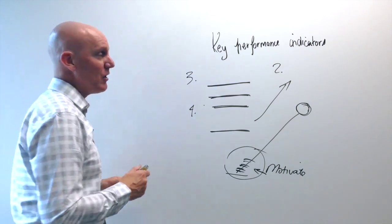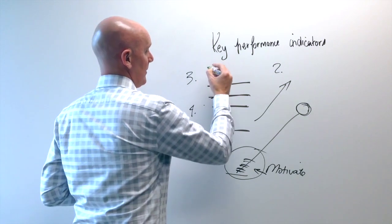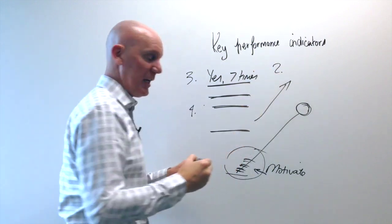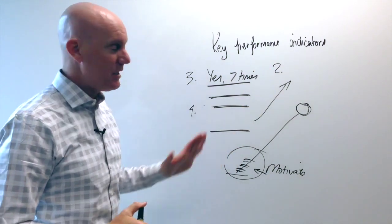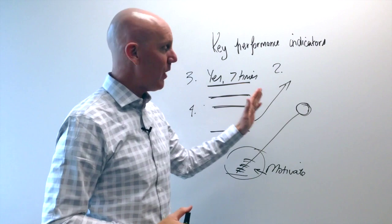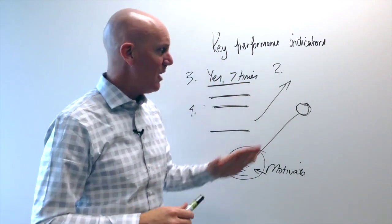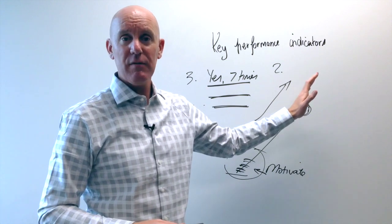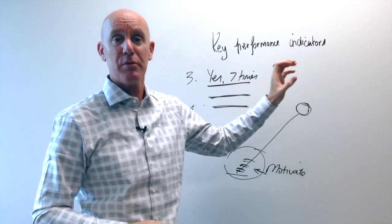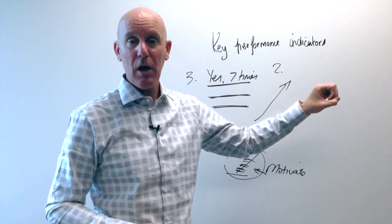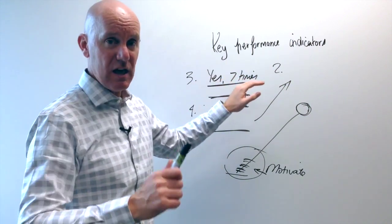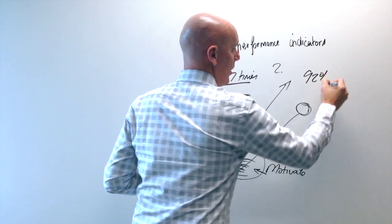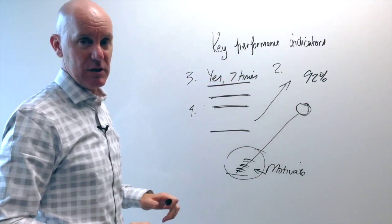He found if he could get his client to say yes seven times, then he would ask for the business. He'd done all his research and tracked it to where if he could get people to say yes. Now, understanding the science of the law of occupied space, you get seven yeses, what's occupying the mind of your prospective buyer? They're ready to buy. He found if he could count seven yeses and ask for their business, he was closing 92% of the calls.